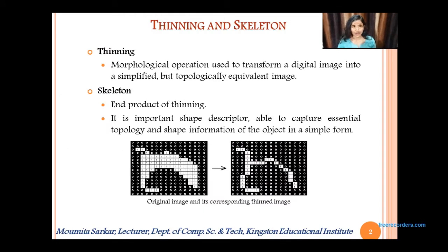First of all, we need to know thinning. What is thinning? Thinning is a morphological operation which is used to produce a simplified yet topologically equivalent image, and the end product of this thinning is the skeleton.